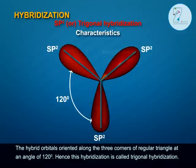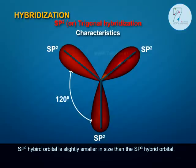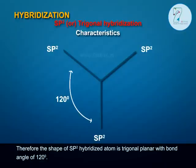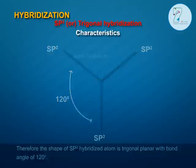Hence, this hybridization is called Trigonal Hybridization. SP2 hybrid orbitals are slightly smaller in size than SP3 hybrid orbitals. Therefore, the shape of an SP2 hybridized atom is Trigonal Planar with a bond angle of 120 degrees.